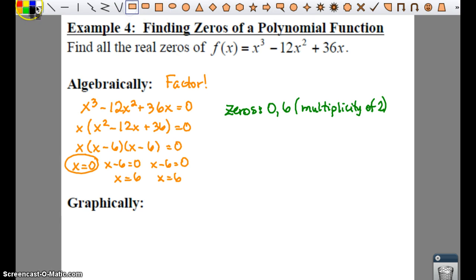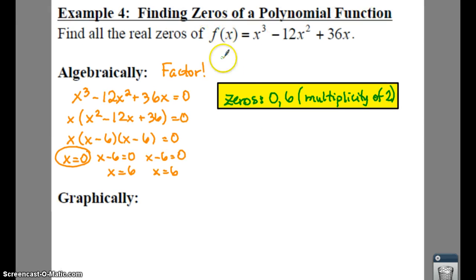Now, if you have three of the same zeros, that means you're going to have a multiplicity of three. If you have a multiplicity of one, where you only have it once, you don't have to write it out. So you don't actually have to write out multiplicity of one.